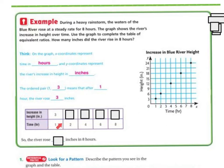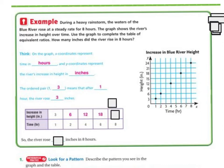If I go over 2, it's up 6. Over 4, up 12. Over 6, up 18. Over 8, up 24 — keeping the equivalent ratios consistent. So the river rose 24 inches in 8 hours. Looking at the graph: 8 hours corresponds to 24 inches.